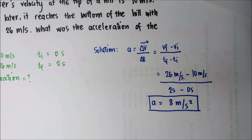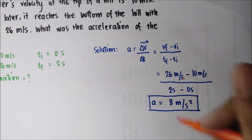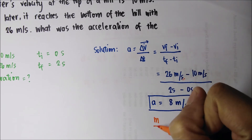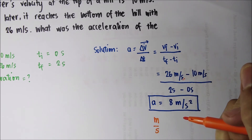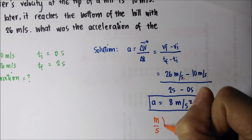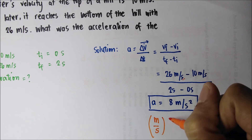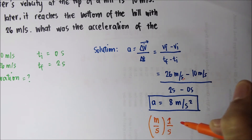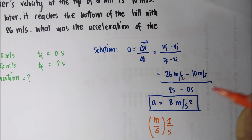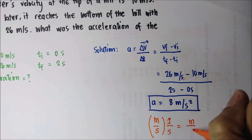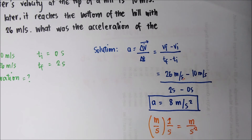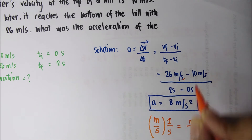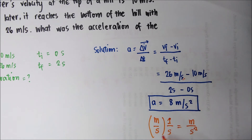You might be wondering why we use the unit meters per second squared. The unit for velocity is meters per second. Since we are dividing velocity by time, it's like multiplying by 1 over seconds. So the unit becomes meters per second squared — that's why it's squared, because there are two seconds in the denominator.